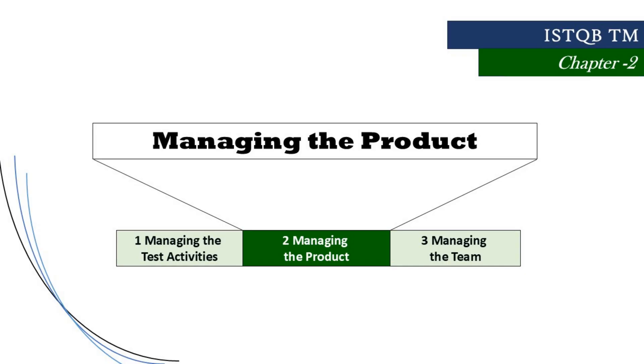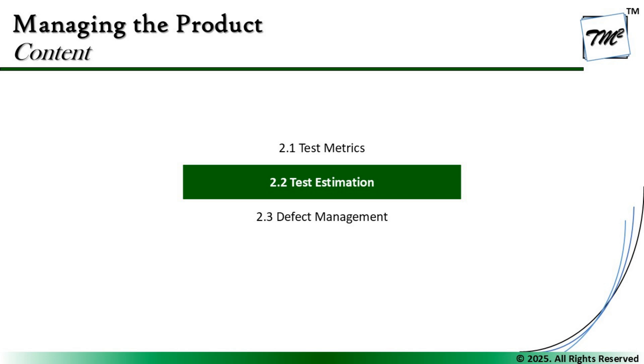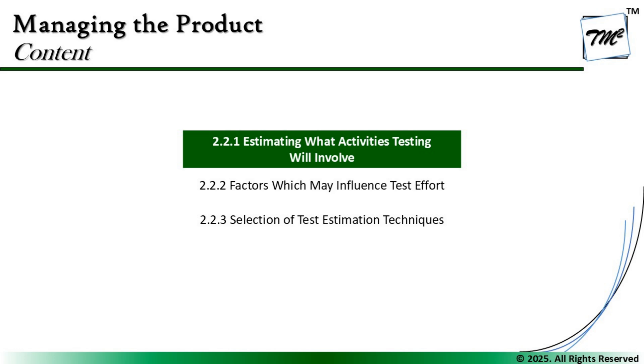Hello friends and greetings for the day. Welcome back to another tutorial on ISTQB advanced level test management certification. We are in chapter 2, talking about managing the product, and today we shall be stepping into the next segment: 2.2 Test Estimation. Specifically, the very first sub-segment, 2.2.1 — estimating what activities testing will involve and what it takes to do the estimation for a test project, including how different factors influence it.